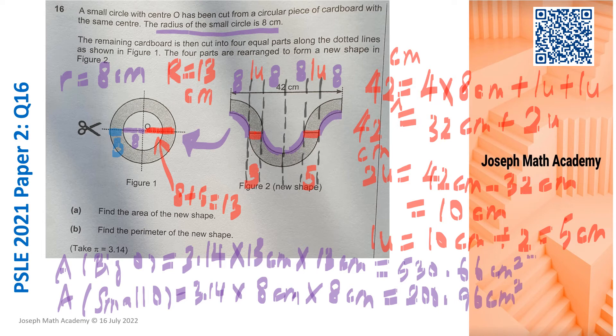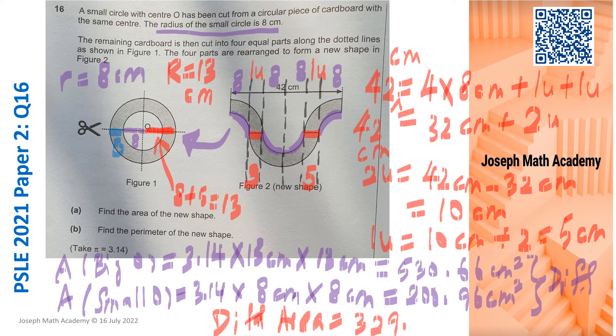Let's do the same thing for the small circle. 3.14 times 8 times 8. That will give me 200.96 square cm. So if I take these two areas and find the difference, that is already my part A answer. The difference in area is 530.66 minus 200.96 and I have gotten 329.7 square cm. Part A is found.